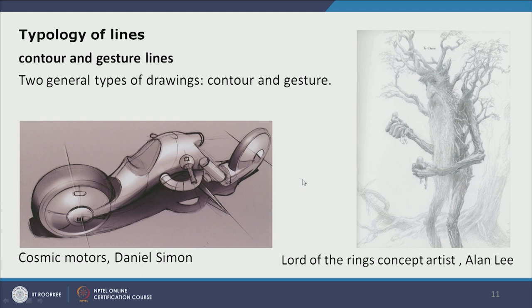In the concept design by Alan Lee, concept artist of Lord of the Rings, lines do not follow the outer boundary of a shape — they freely come within the shape and go outside, creating a feeling rather than a strict outline. Gesture line concentrates on the mood and characteristics of the line, while contour line delineates the outer shape of the form.